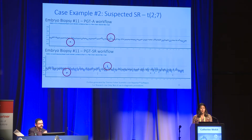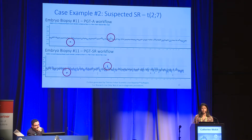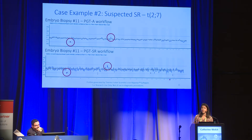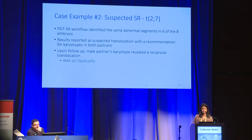Because of the high number of abnormalities that were all the same, we reanalyzed all samples on the PGTSR high-resolution workflow. Results came back with no euploid samples; six had the same abnormal segments, and two additional abnormal samples involved other chromosomes. The two embryos previously called with a partial abnormality on only chromosome 2 or 7 were now called aneuploid — for a total of six unbalanced embryos. You can see how much noisier the PGTSR workflow is due to tile size, which is why we use it for SR cases only. The PGTSR workflow results were reported as a suspected translocation with a recommendation for karyotyping in both partners, and the male partner's karyotype revealed a reciprocal translocation exactly where we expected it.